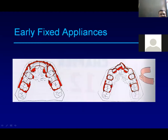These diagrams show early fixed therapies. They used to band all the teeth — this is called the ribbon arch or Hawley-arch appliance. They used to band each and every tooth with a band retainer, then weld the bracket over it, and use ligature or elastic ties to move the teeth.